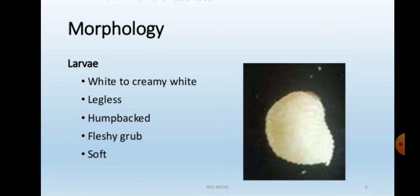The morphology of the larvae: the larva is white to creamy white, legless, humpbacked, and a fleshy soft grub. This pest is a common pest worldwide and is particularly found throughout India. It is one of the most destructive stored grain pests, also called a stored grain pest.